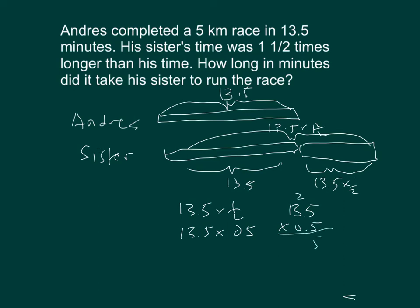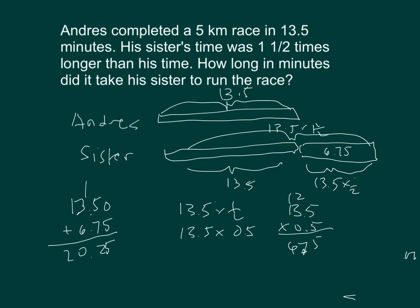Multiplying 13.5 times one-half: working through the multiplication with two decimal places gives 6.75. So the sister's time is 13.5 plus 6.75, which equals 20.25 minutes to run the race.